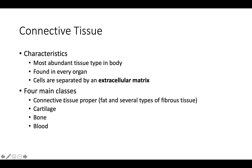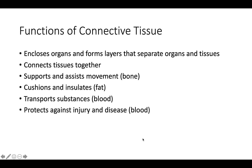We can get deeper into those when we get to those particular systems, but as a general categorization we have four different types of connective tissue. Connective tissues perform many functions, but most importantly they support and connect other tissues — from the connective tissue sheath surrounding muscle cells, to the tendons that attach bones to muscles, and the skeleton that supports the positions of our body. Protection is another major function, in the form of fibrous capsules and bones that protect delicate organs. Specialized cells in connective tissue also defend the body from microorganisms.